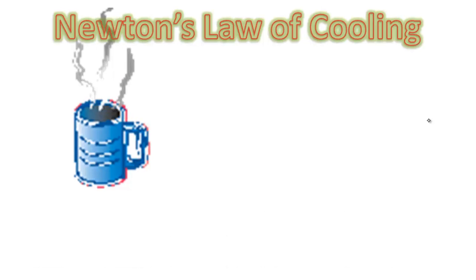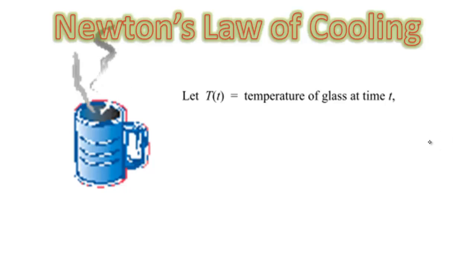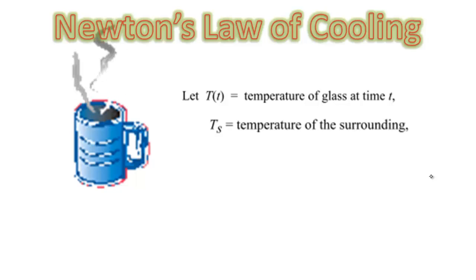Let us try to express Newton's law of cooling mathematically using a differential equation. First, we let T be the temperature of the glass at time t, and let Ts be the surrounding room temperature. Then we know that the rate of change of the glass is the derivative of T with respect to time, which is proportional to the temperature difference between the glass and the surrounding.